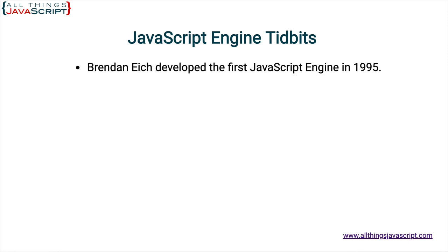It was rather rudimentary compared to what we have now. The first versions were mainly interpreters. Modern engines use just-in-time compilation, which is much more efficient and causes JavaScript to run faster. Plus, modern engines have a lot more to deal with in the JavaScript language, because many things have been added since that first iteration of 1995.